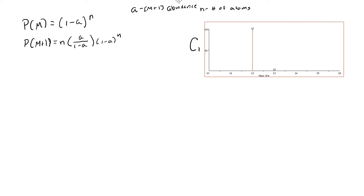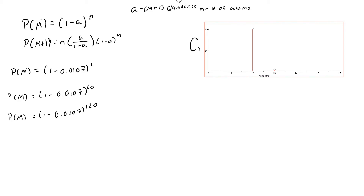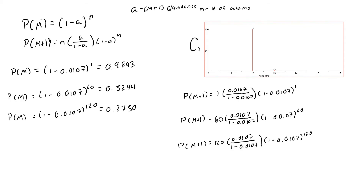Let's calculate the monoisotopic abundance for C1, C60, and C120. The only thing we are changing is the exponent, because the element is the same. As the number of atoms increases, the monoisotopic abundance decreases, consistent with what we saw in the graphs. Doing the same for the M+1 ion, we change both the coefficient in front and the exponent at the end. As we increase the number of atoms, the M+1 ion increases because of the greater likelihood that one atom will carry the higher isotope.